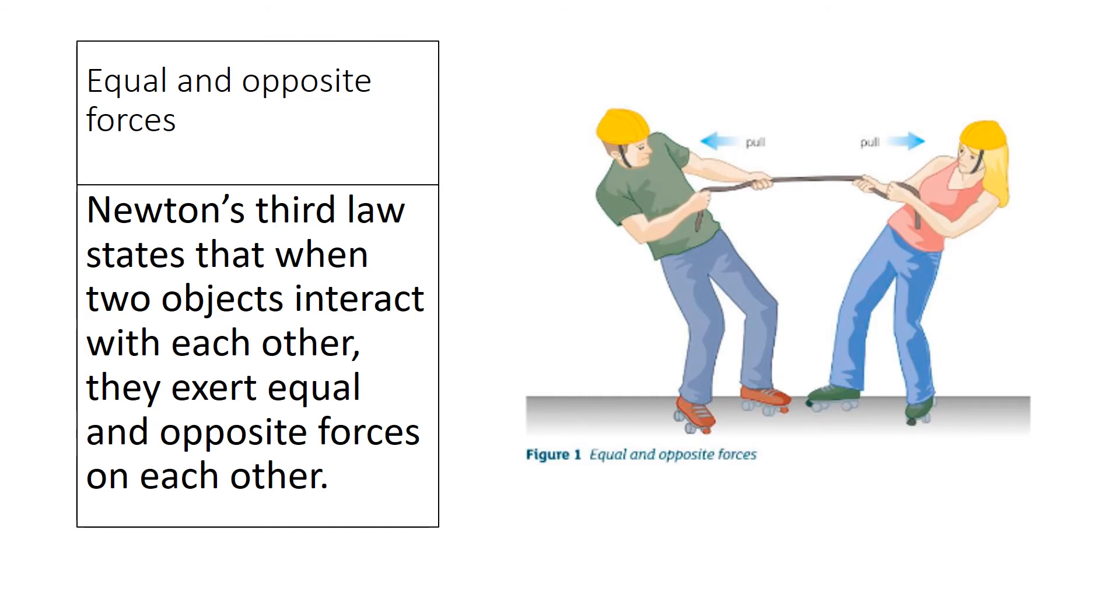If you look at the two people in the diagram, they're both pulling on the rope. They are both pulling with equal and opposite force. We know that because neither of them have fallen over. If one of them was pulling with more force than the other, then what we would see is movement in one direction or the other. However, at this point, you can see that nobody's falling over, so the forces are equal and opposite.